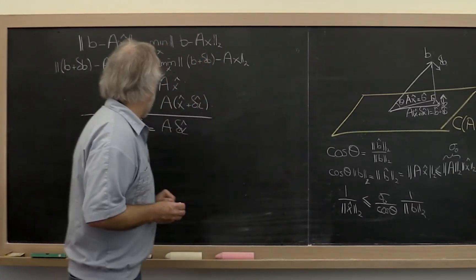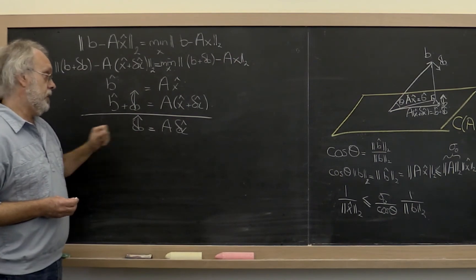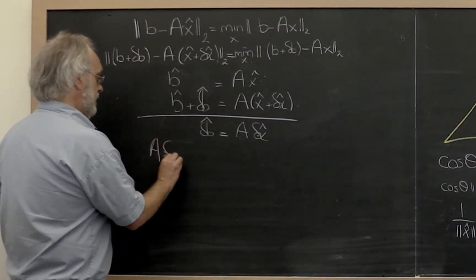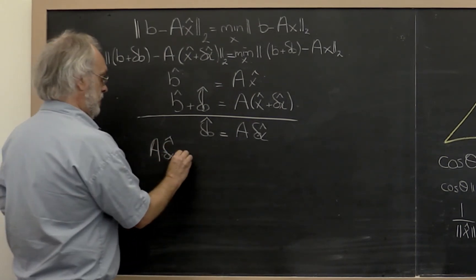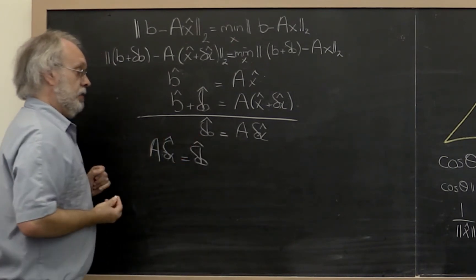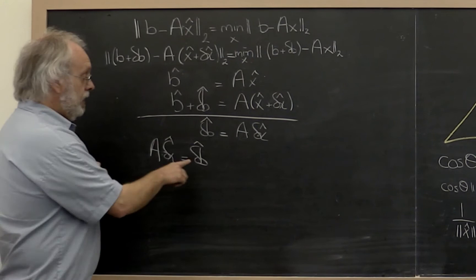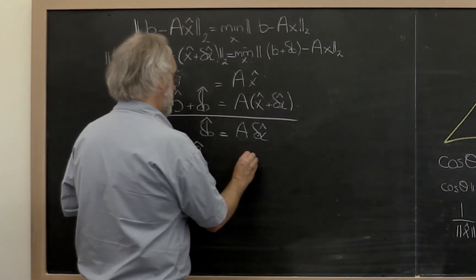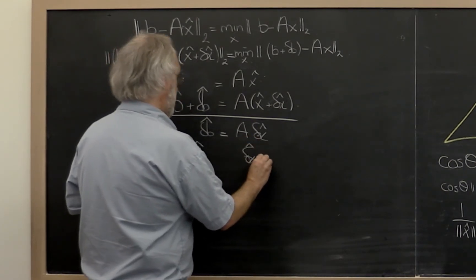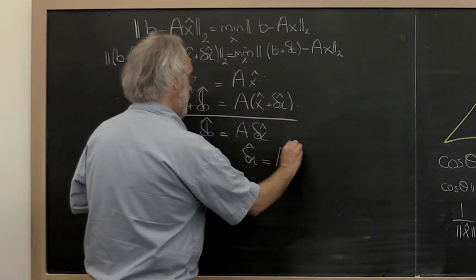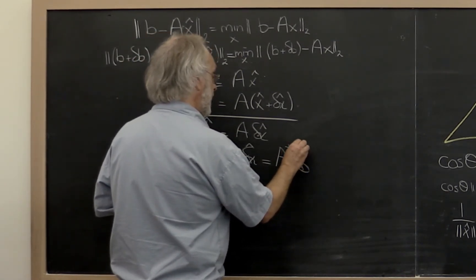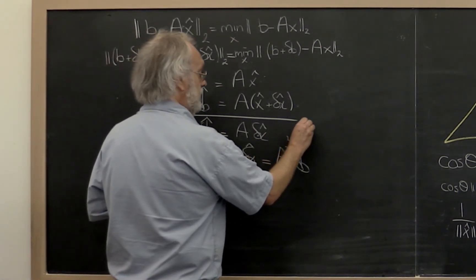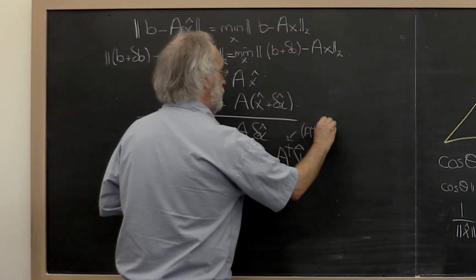Now let's turn to this equation here. We can rewrite that as A · δx̂ — the change in the solution equals the projected change in the right-hand side. And because δb̂ is in the column space of A, this actually means that the change in the solution equals the pseudo-inverse of A times the change in the right-hand side after projection. The pseudo-inverse is (AᴴA)⁻¹Aᴴ.